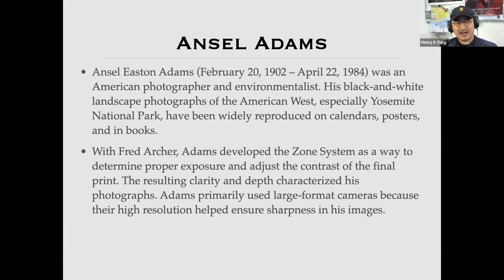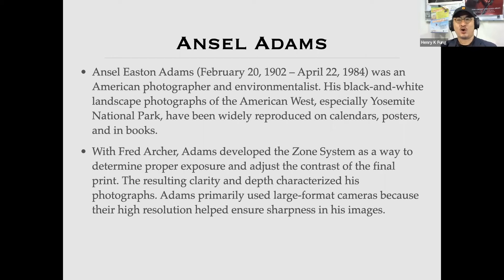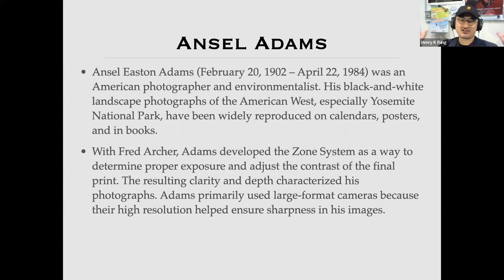Together with Fred Archer, Ansel Adams developed the Zone System to determine proper exposure and adjust the contrast of the final print. The resulting clarity and depth characterize his photographs — everything looks clean and clear, with a dramatic range from light to dark. Adams primarily used large format cameras for their high resolution. He mostly used 8-by-10-inch film sheets — about the size of A4 paper — which is 30 to 40 times bigger than 35mm format, meaning far more information on each piece of film.